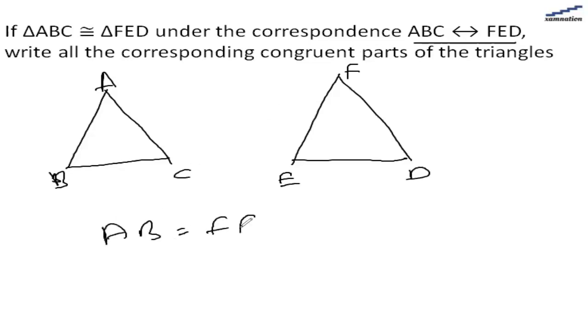AB will be equal to FE, BC is equal to ED, and AC will be equal to FD.